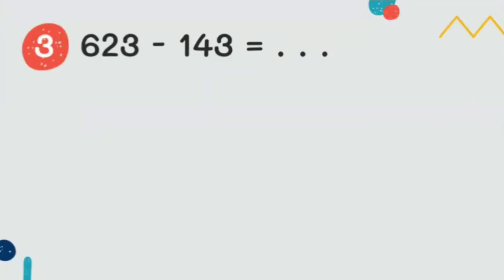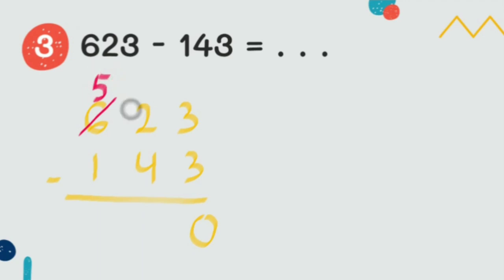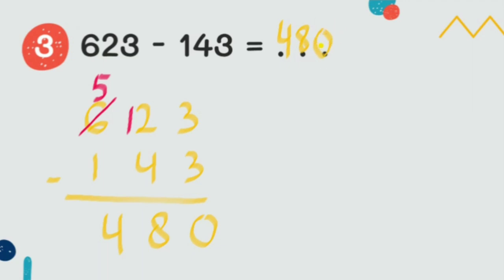Next we're going to subtract six hundred twenty-three minus one hundred forty-three. We subtract the ones: three minus three equals zero. Then two minus four — we cannot do that, so we take from the hundreds. We take one hundred, so hundreds becomes five and tens becomes twelve, because ten plus two equals twelve. Twelve minus four equals eight, and five minus one equals four. The answer is four hundred eighty.